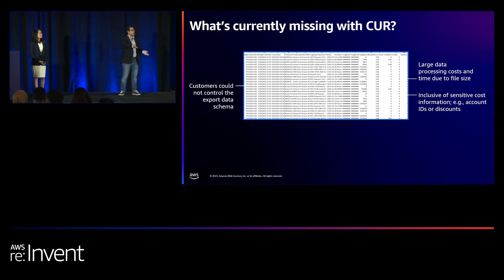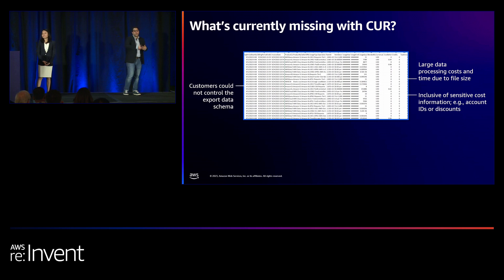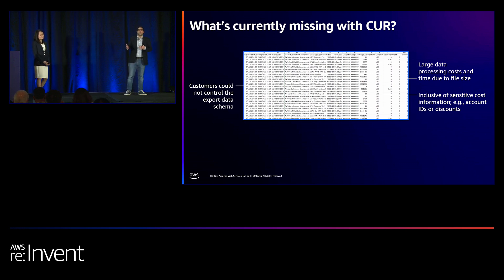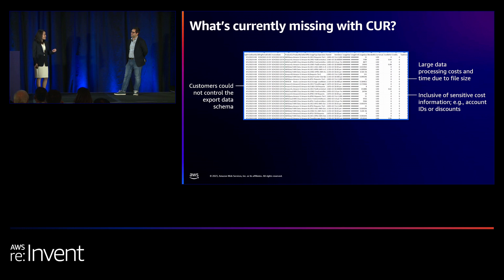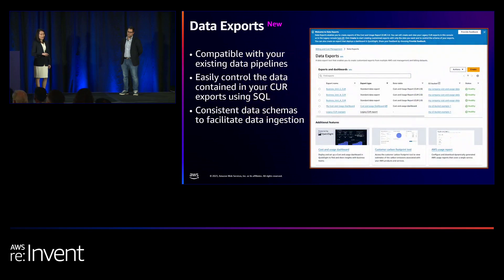However, as AWS products and services have grown, this report grew larger and more complex — not just in breadth of services and SKUs, but literally in the file size being delivered month over month. Any changes to the CUR could cause you to have to redo your data pipelines. And if you wanted to share your CUR for third-party analysis, you might not be able to for compliance reasons — you don't want to expose your organization's AWS account IDs or any visibility into discounts you might be getting. So how do we solve all of those issues — a consistent data schema, reduced CUR file size, and the ability to remove sensitive information before you export?